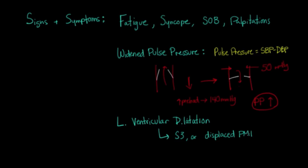And this may also displace the point of maximal impulse. So when we talked about left ventricular hypertrophy earlier, the PMI would actually move medially towards the sternum. But in a case where the heart is volume overloaded, it'll actually move laterally and possibly inferiorly.